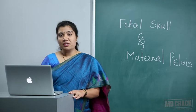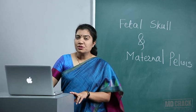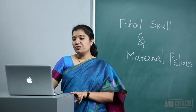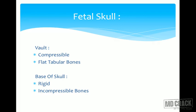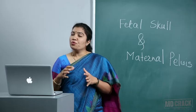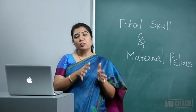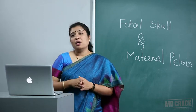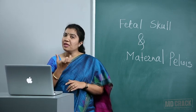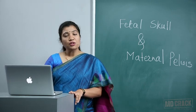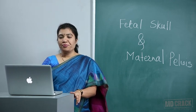We are going to revise fetal skull and maternal pelvis today. The diameters required in normal labor and different malpresentations are commonly asked. The fetal skull is made up of vault and the base of skull. The vault has compressible flat tabular bones, while the base of skull is rigid and made up of incompressible bone. During labor, the vault gets compressed and diameters reduce, but the basal portion remains rigid and incompressible.